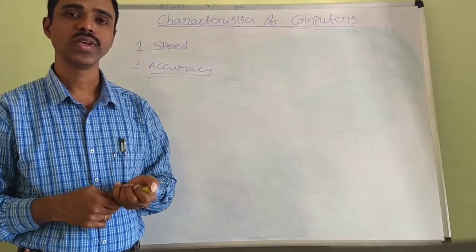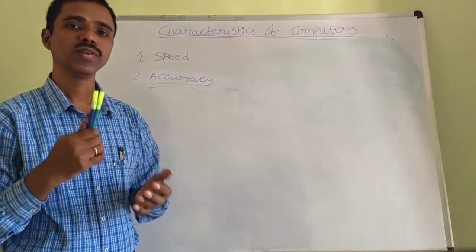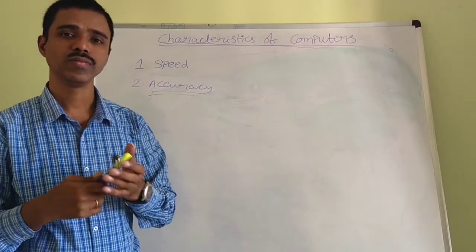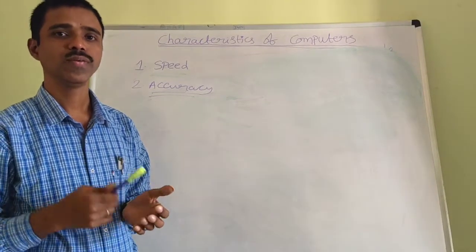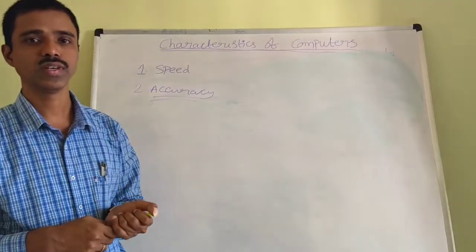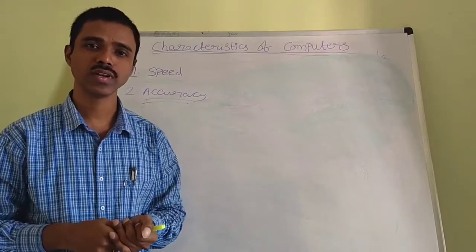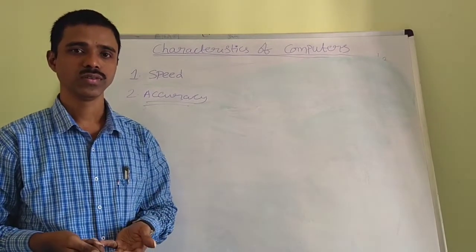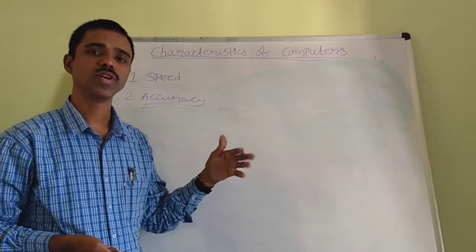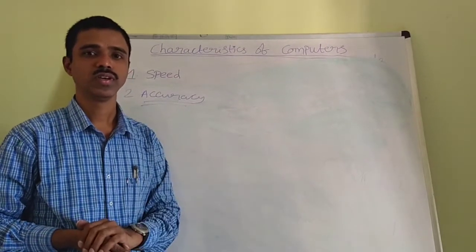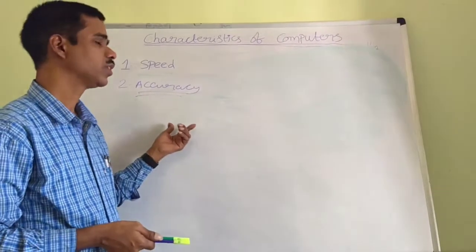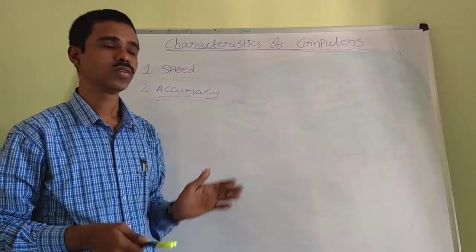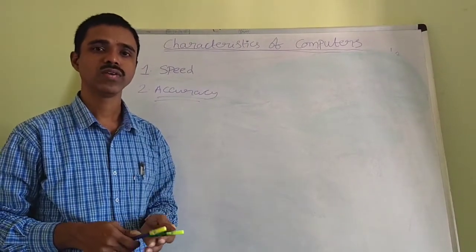The second property is accuracy, which means exactness — how our computer gives results very accurately. Whenever the user enters the wrong input, the computer might give wrong results. For example, if a student wants to check a result and supplies the wrong article number, the computer cannot give the correct result. That is because of human mistake, not the computer's mistake. Whenever the user supplies valid data, the computer gives results very accurately.